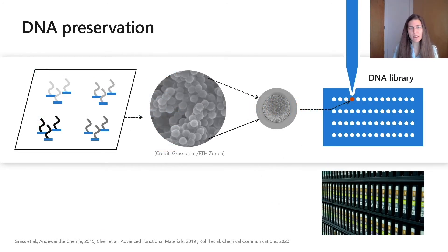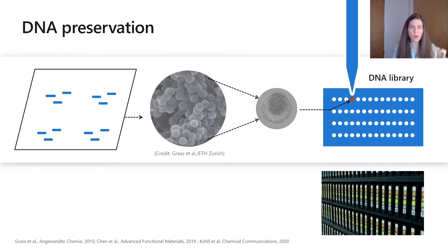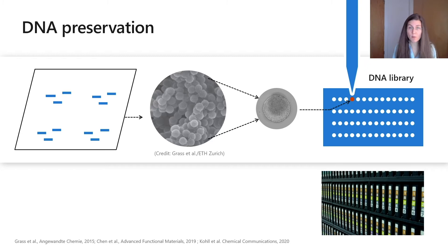Once the molecules are made, they're removed from the substrate where they were grown and encapsulated. Here's one example: silicon nanoparticles, where the DNA is attached to the particles and then another layer of silica is grown on top to protect the DNA from the environment. You can then organize the DNA into what we call a DNA library — very much the analog in the DNA world to a tape library — which is essentially a way to organize different pools of molecules spatially, so that when you need to reference the data, you can go back to that location and recover the molecules to read them.